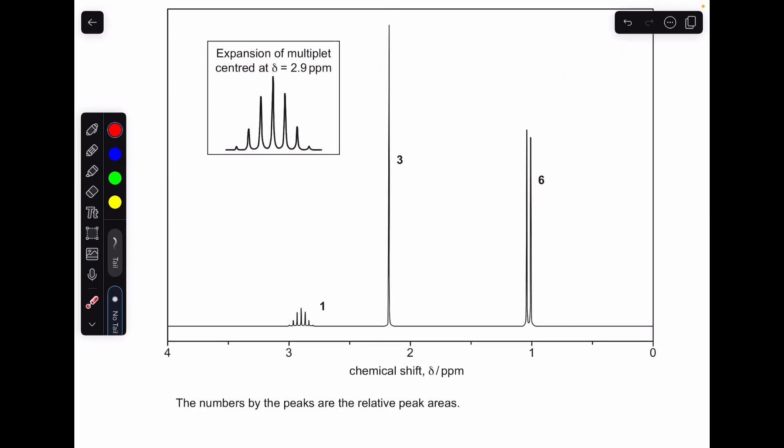Moving on to the proton NMR spectrum. I'll take each signal in turn and do my usual thing. So first, let's look at this one here. This is a doublet. So what does that mean? There's an adjacent CH. We've got an adjacent CH—that's why we're seeing this doublet.